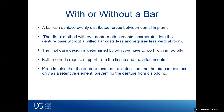How do we choose with or without a bar? A bar can achieve evenly distributed forces between implants. The direct method with overdenture attachments incorporated into the denture base without a mill bar costs less and requires less vertical room. The final case design is determined by what we have to work with intraorally — the amount of space and bone density. Both methods require support from tissue and the attachments. Keep in mind that the denture rests on the soft tissue, and the attachments act only as a retentive element preventing the denture from dislodging.